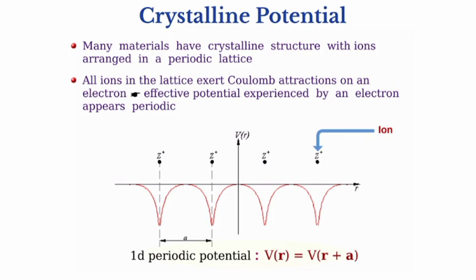So let us look into this picture. Suppose there is an atomic nucleus of charge Ze. The potential energy of the electron is given by V = −Ze²/(4πε₀R), where ε₀ is the free-space permittivity and R is the distance of the electron from the nucleus.